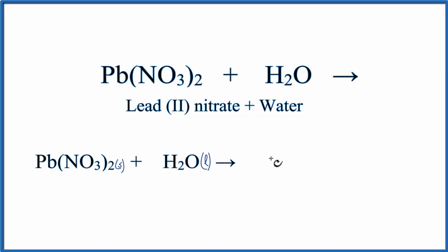So we have the lead ion, that's Pb, and that will have a 2-plus charge plus NO3. That'll be minus. That's a polyatomic ion. It's called nitrate and it has a minus charge. So NO3 minus.